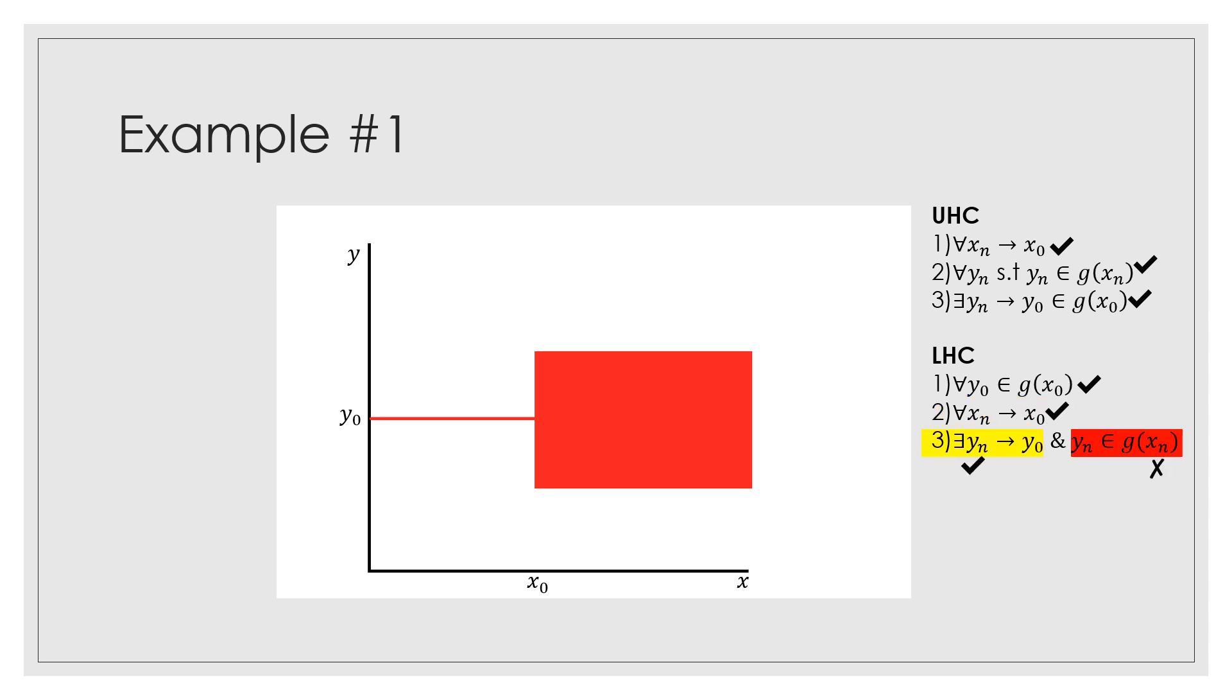Now, for this last one here, we say that there exists a yₙ that goes to y₀ over here. So we can clearly pick a case in our correspondence that there exists a complete limit inside this correspondence from the y values that approaches y₀, but we need this also, the second condition of yₙ being contained in the image of g(xₙ).